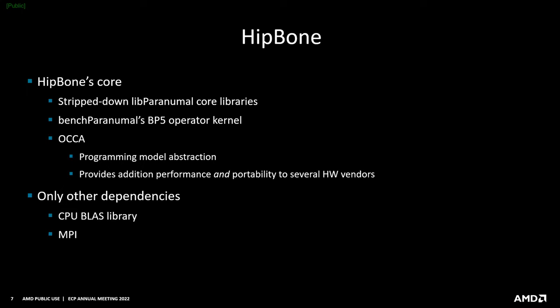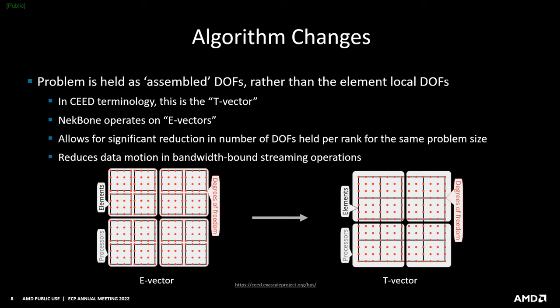At its core, HipBone uses libParanumal's core libraries for things like mesh wrangling, halo exchange, and finite element operator construction. We took Bench Paranormal's BP5 operator as a starting point. We also use OCCA for portability — it's a just-in-time compilation abstraction model that lets us leverage optimizations at JIT time, knowing things like loop bounds and being able to smartly unroll without relying on compiler heuristics. It gives us portability to several hardware vendors, which is why I'll show results not just from AMD hardware but also from NVIDIA.